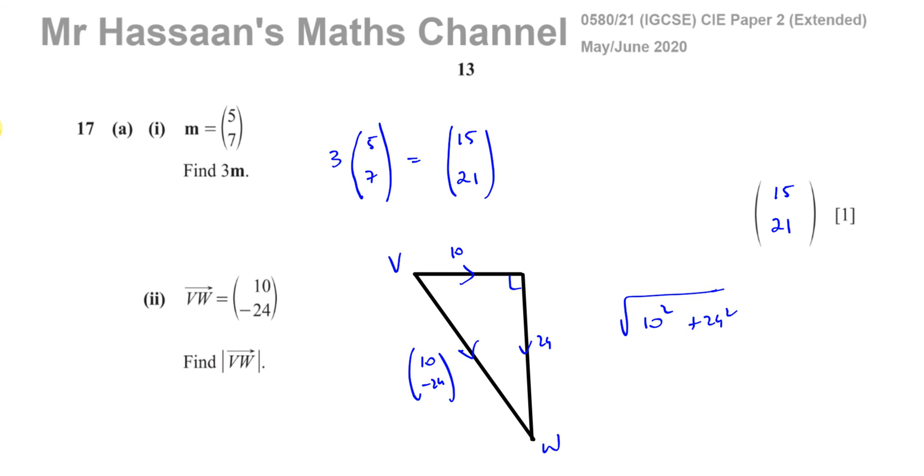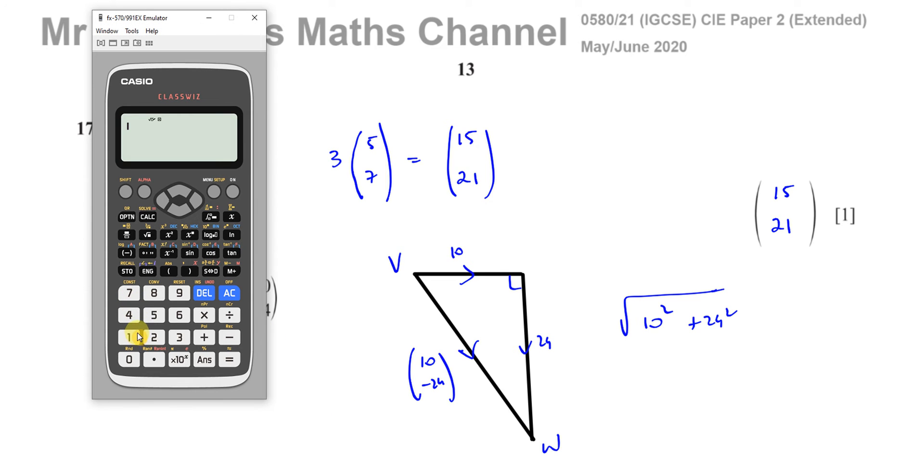So it's just basically using Pythagoras' theorem. When you see a question like this, all you need to do is square the two numbers, add them together and find their square root. So this looks like actually a 5, 12, 13 triangle. Let's have a look. So 10 squared plus 24 squared.